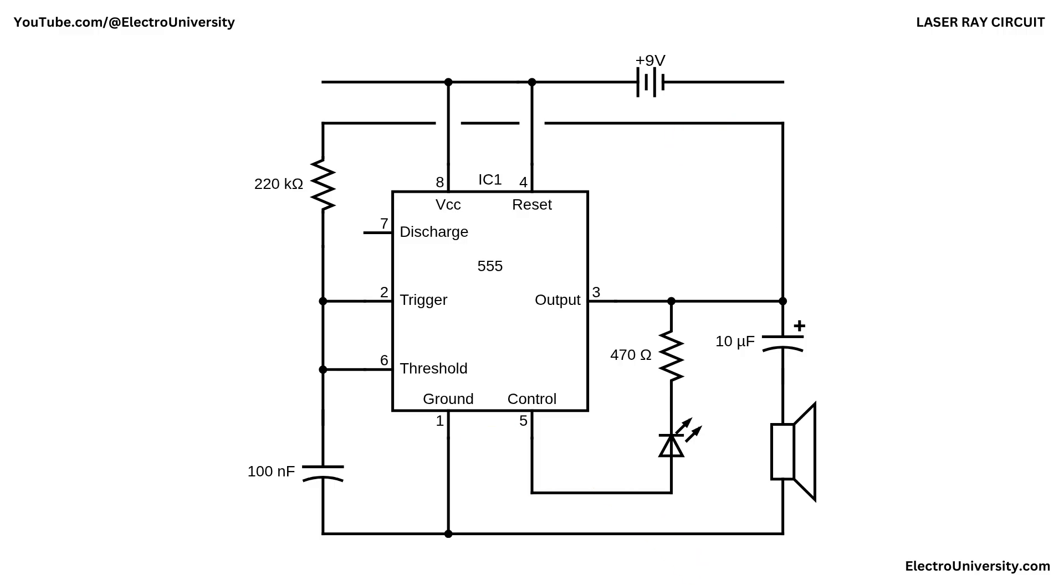As the 555 timer oscillates, the output signal drives the LED through the 470 ohm resistor, causing it to blink rapidly. At the same time, the square wave signal is sent through the 10 microfarad capacitor to the speaker. This causes the speaker to emit short bursts of sound in sync with the LED's flashing, producing a classic laser gun sound effect.